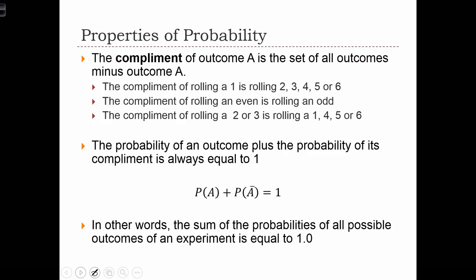The complement of an outcome A is the set of all outcomes minus outcome A. So when we roll a die, the set of all outcomes is rolling a one, two, three, four, five, or six. In which case, the complement of rolling a one is just this set of all outcomes after you remove the one from it. So now we've got the complement of rolling a one to be a two, three, four, five, or six.